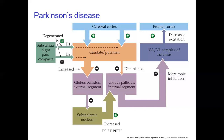Another cause of this disease is related to genetics. There are genes that have been implicated in causing Parkinson's disease — these are alpha-synuclein, Parkin, and DJ1 genes.